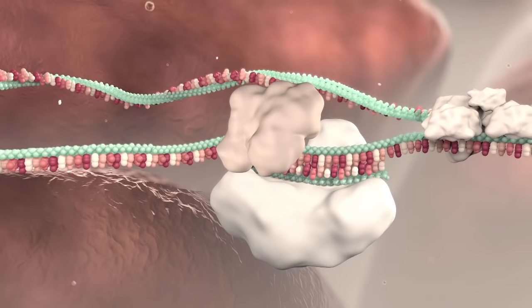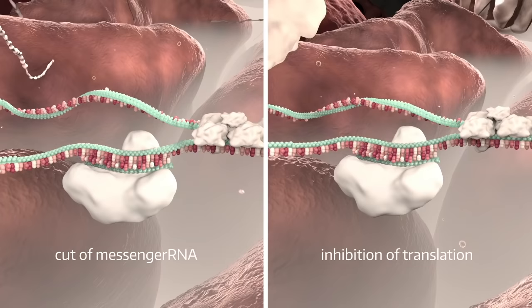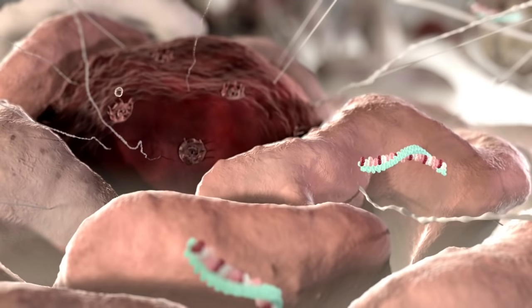Inhibition of translation is another mechanism. In this case, the RISC complex prevents the ribosome subunit from binding. In both cases, the messenger RNA will not be translated into a protein and the gene is silenced.